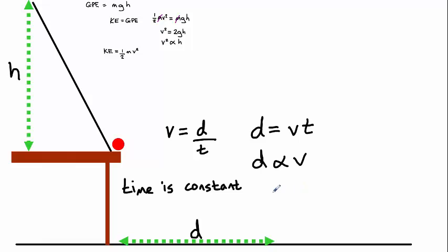So to do this, let's square both sides. So we have D squared is proportional to V squared. And if we can say that V squared is proportional to D squared and V squared is proportional to H, which is what we found out earlier, then D squared must be proportional to H.